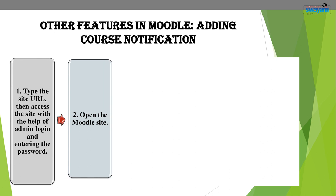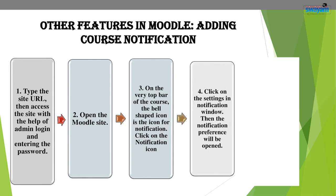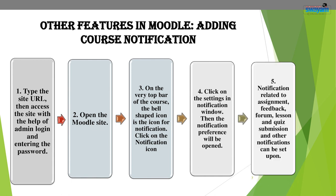Open the Moodle site. On the top right side of the course, a bell-shaped notification icon will be there. Click on this notification icon and then click on Settings in the notification window. The notification preferences will open. Notifications related to assignments, feedback, forum, lesson, quiz submission, and other notifications can be set up here.